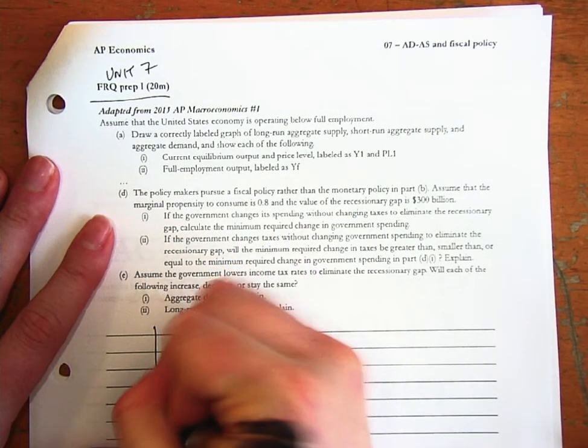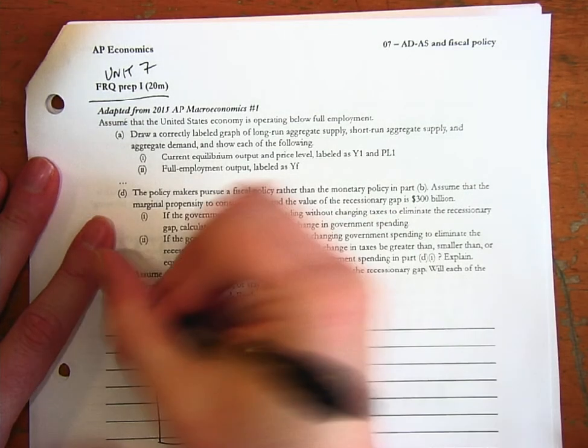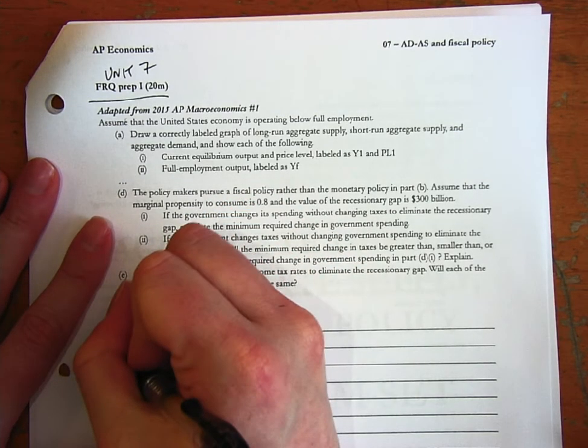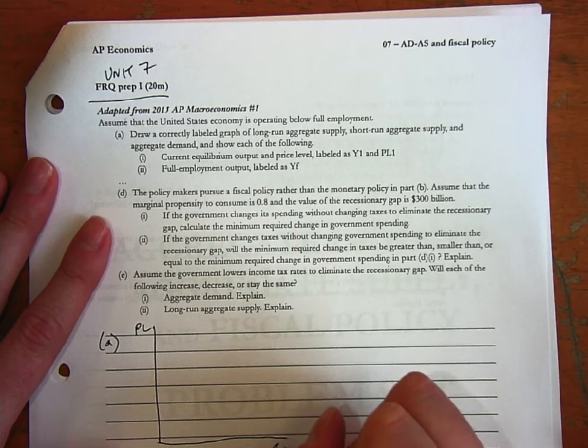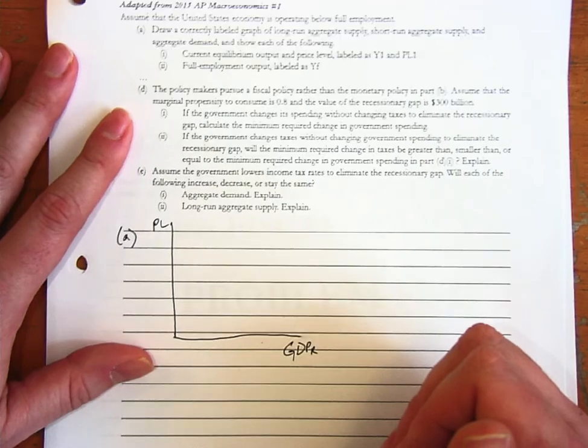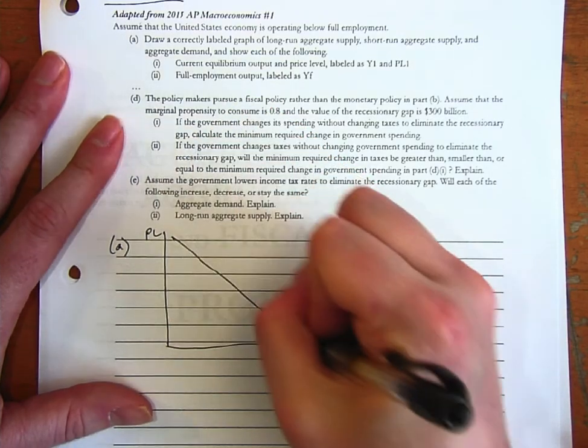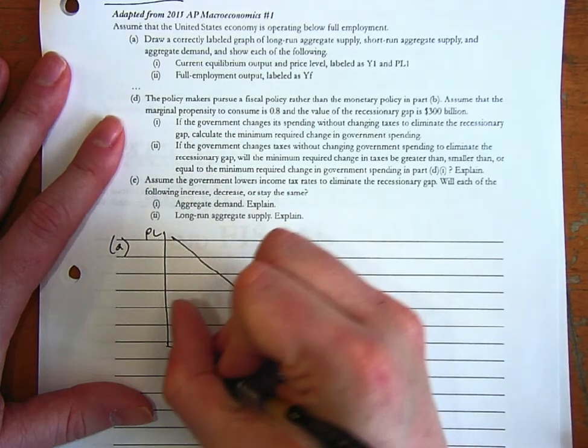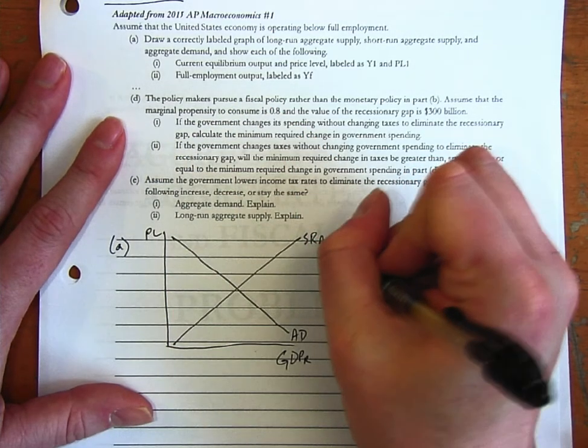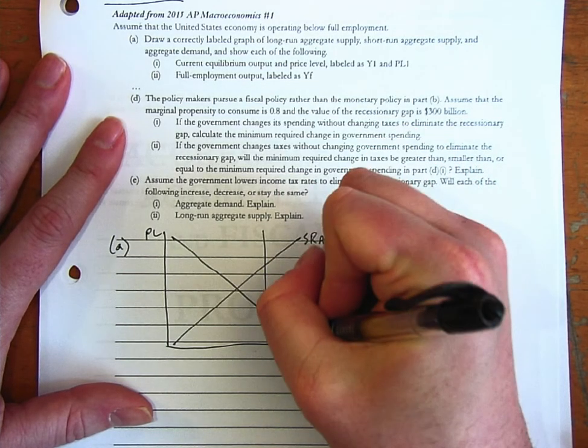So we first start with part A, nice big graph. Price level and we'll say GDPR. You could also say Y. And then it says that we're in a recession, so we're going to draw aggregate demand, short-run aggregate supply, and in a recession...